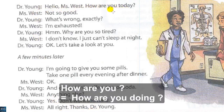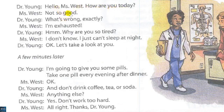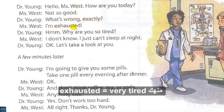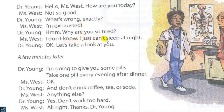How are you today, Ms. West? Not so good. What's wrong exactly? I'm exhausted — very, very tired. Why are you so tired? I don't know. I just can't sleep at night. Okay. Let's take a look at you. A few minutes later: I'm going to give you some pills. Take one pill every evening after dinner. After you finish dinner, you should take a pill. And don't drink coffee, tea or soda. Anything else? Yes. Don't work too hard. All right. Thanks, Dr. Young.